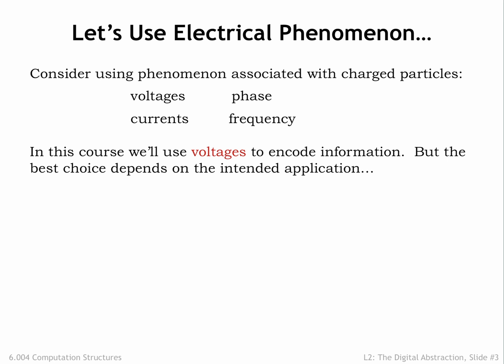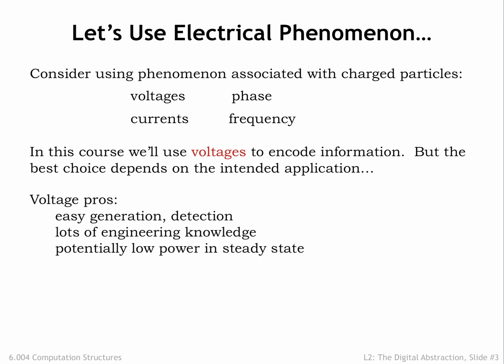To represent sequences of bits, we can use multiple voltage measurements, either from many different wires or as a sequence of voltages over time on a single wire. A representation using voltages has many advantages. Electrical outlets provide an inexpensive and mostly reliable source of electricity, and for mobile applications, we can use batteries to supply what we need.